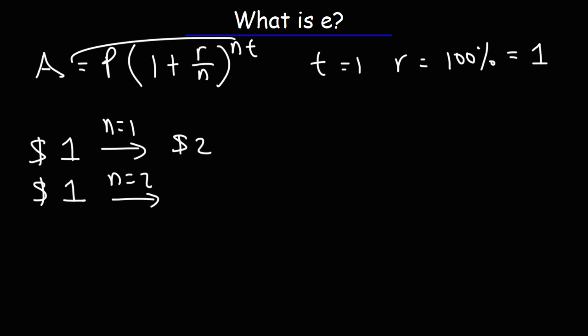In this case, plugging everything into this formula, you'll have P is 1, r is 1, n is 2, and t is going to be 1. So it's just going to be 1 plus 1 half raised to the second power. So after the end of the year, you're going to have $2.25.